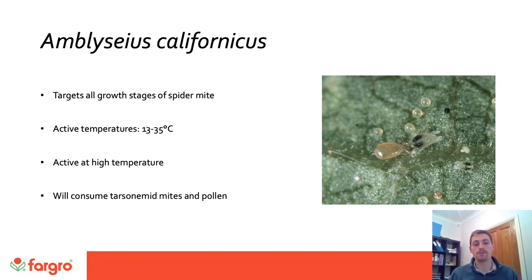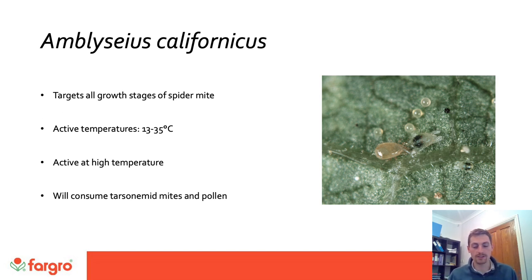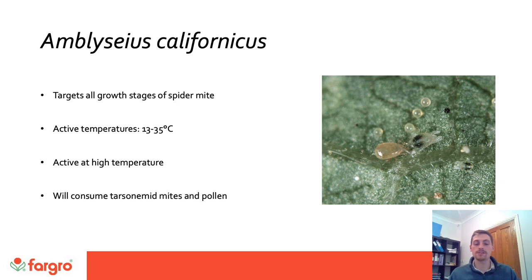Looking at Amblyseius californicus: this is a licensed predator so it has to be applied only under full enclosure, as it's a non-native predator not getting out into the wider environment. It's very useful for activity at higher temperatures, so you're looking to apply this within the warmer months. It complements Phytoseiulus — in warmer conditions Phytoseiulus often moves further down the canopy because it doesn't like the very warm conditions in the hot summer months, so you'll get good control of spider mite in the lower canopy.